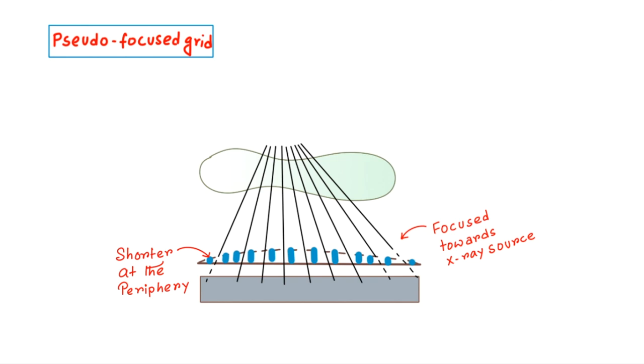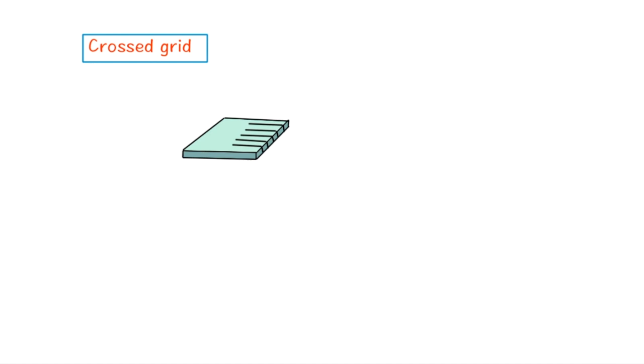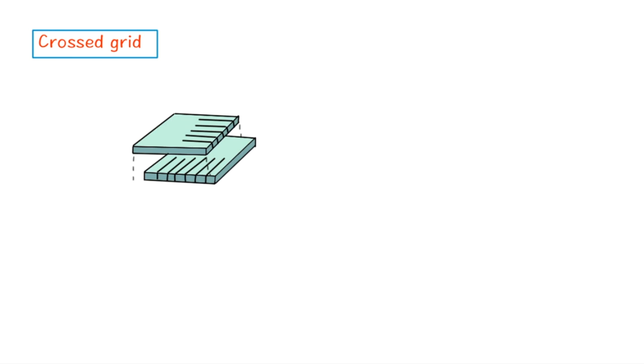Now the last type of stationary grid is cross grid. In this type, two grids are placed at right angle to each other. This type of grid is used to eliminate the X-ray photons which are scattered in the plane of lead strips.